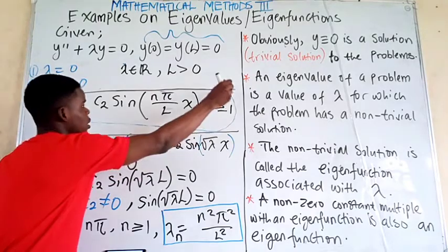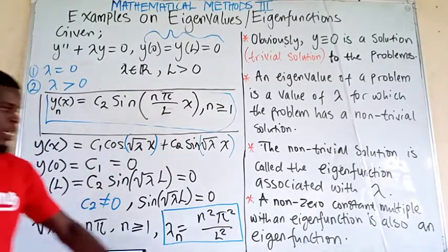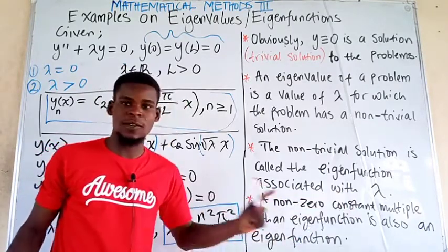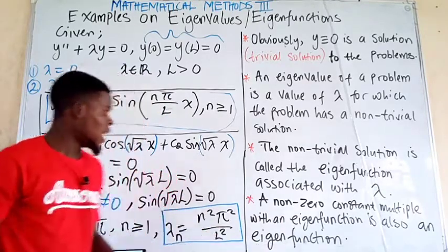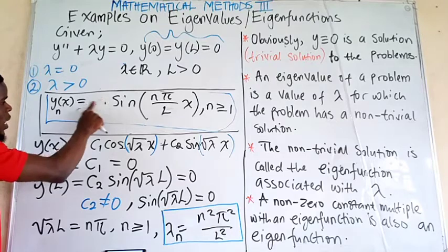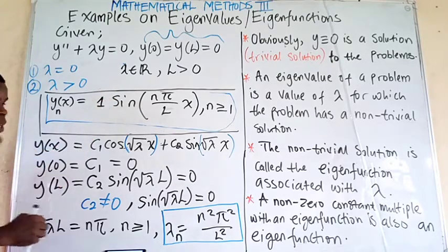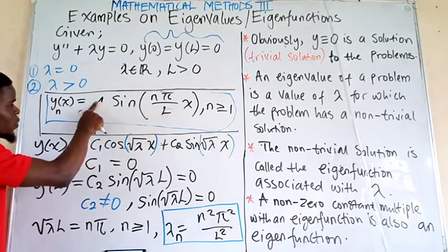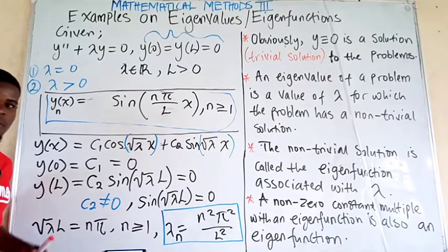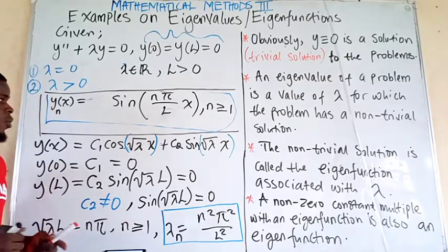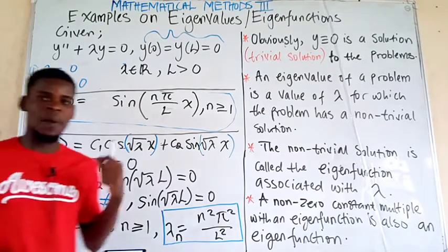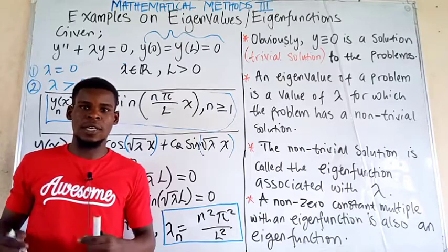Note that a non-zero constant multiple of an eigenfunction is also an eigenfunction. So we can simplify by setting c₂ = 1, giving the eigenfunction yₙ(x) = sin(nπx/l). With both eigenvalues and eigenfunctions found, we have covered all the key theory. In the next video, we will apply this to solving specific examples. Thanks for watching.